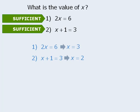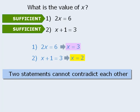Now can you see the problem here? From statement 1, we concluded with certainty that x must equal 3. And from statement 2, we concluded with certainty that x must equal 2. The important feature of data sufficiency questions is that the two statements always provide true information. If this is the case, then the two statements can never contradict each other. Since the two statements in this question contradict each other, this could never be an official GMAT question.